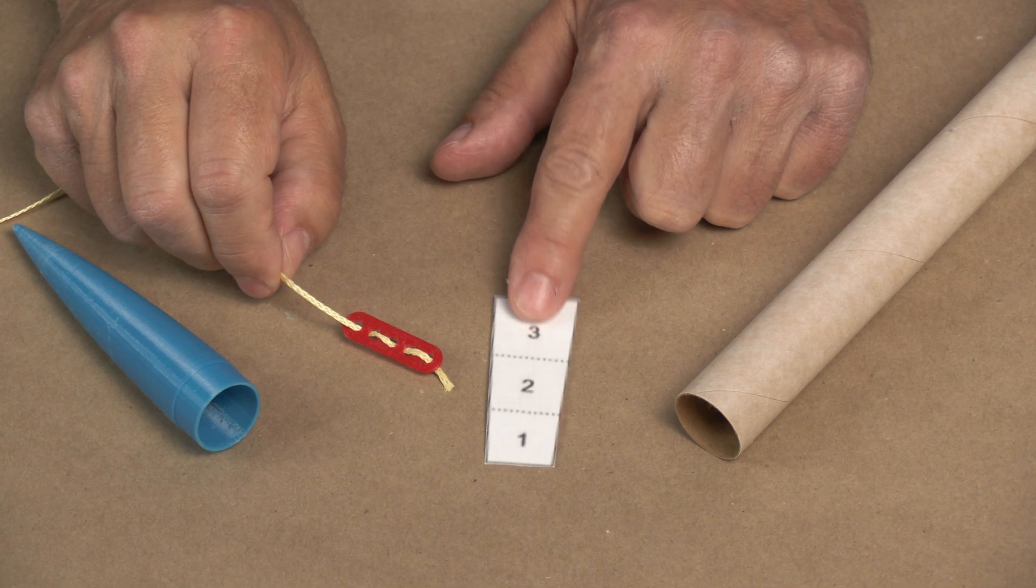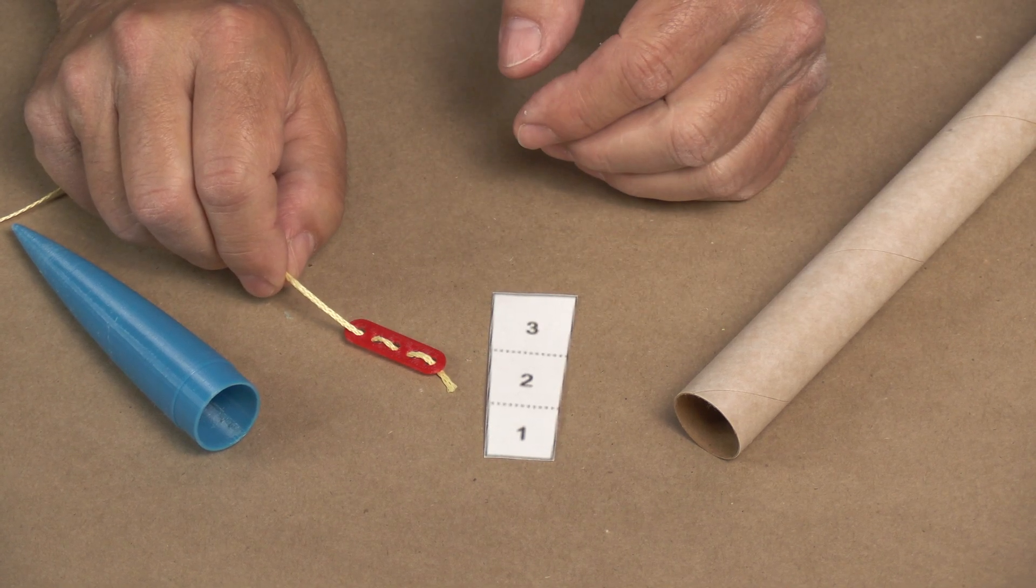If you find that the fin can is a little tight or a little bit too loose, you can change the size of it, say 1% or so on your slicer. And just adjust that until the fin can or the nose cone, whatever part you need, fits the way you want it to.